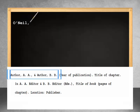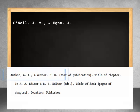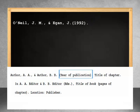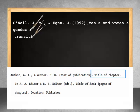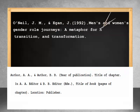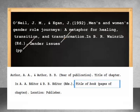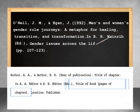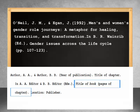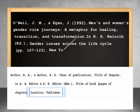The citation includes the author or authors and their initials, the year of publication, the title of the chapter, the name of the editor or editors, the title of the book, followed by the pages of the chapter in parentheses, and the location of the publishing company.